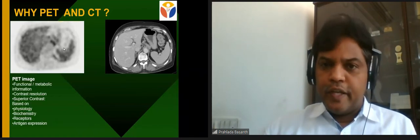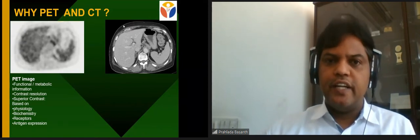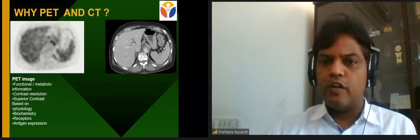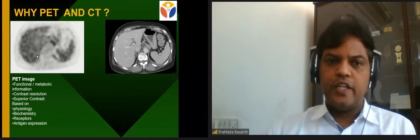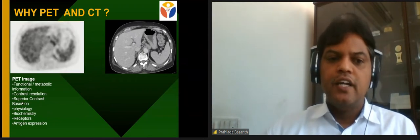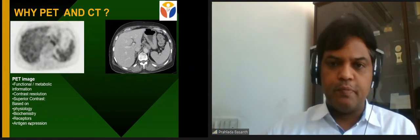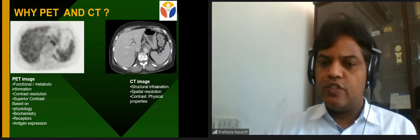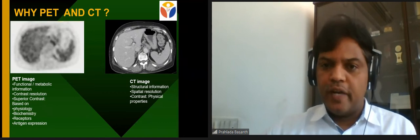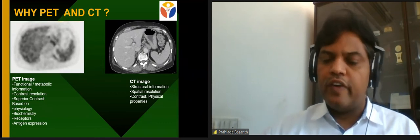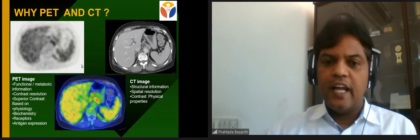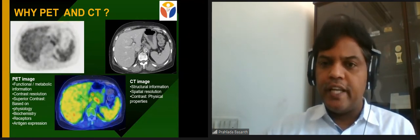Reading PET images alone is difficult, so nowadays with advances in computer science, PET images are fused with CT images. Together we get functional or metabolic information from PET — based on physiology, biochemistry, receptor expression, or antigen expression — combined with CT's structural information about organs and blood vessel delineation. When both images are fused, you get structure and function together, and the contrast from PET is superior to CT.